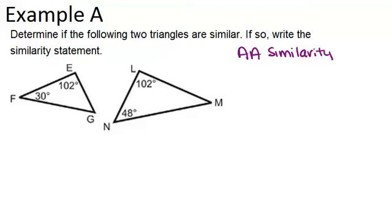Already between these two triangles, I see one pair of angles that's congruent. Angle E is congruent to angle L, because they're both 102 degrees. Now, the other two angles don't seem to match, 30 and 48.